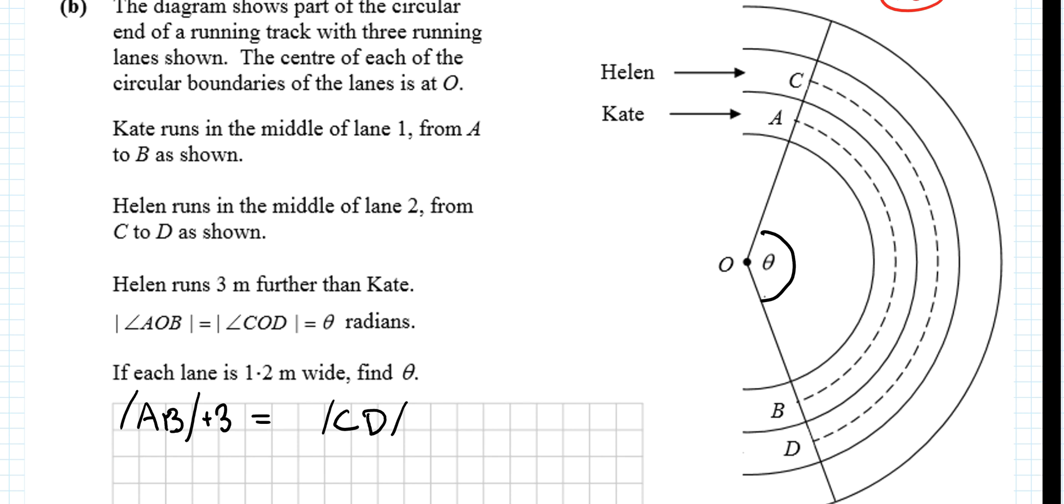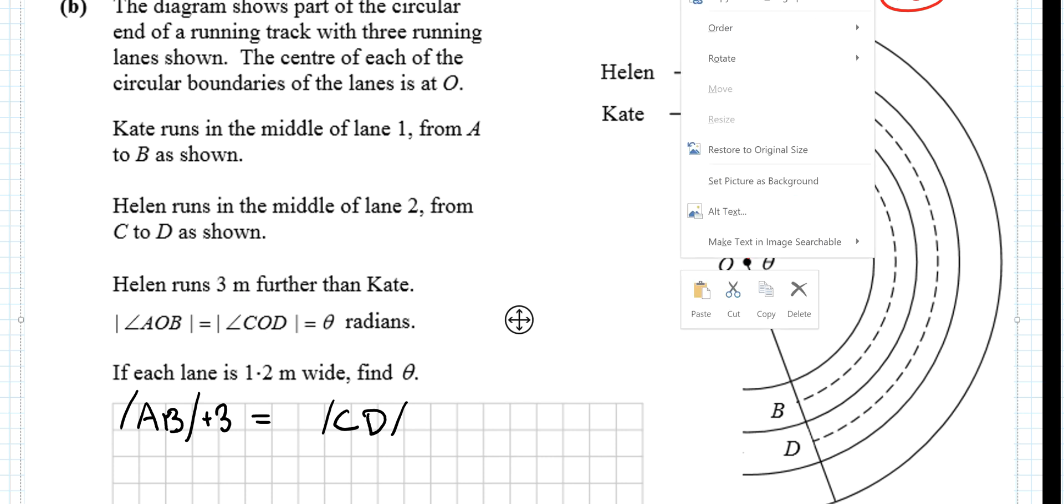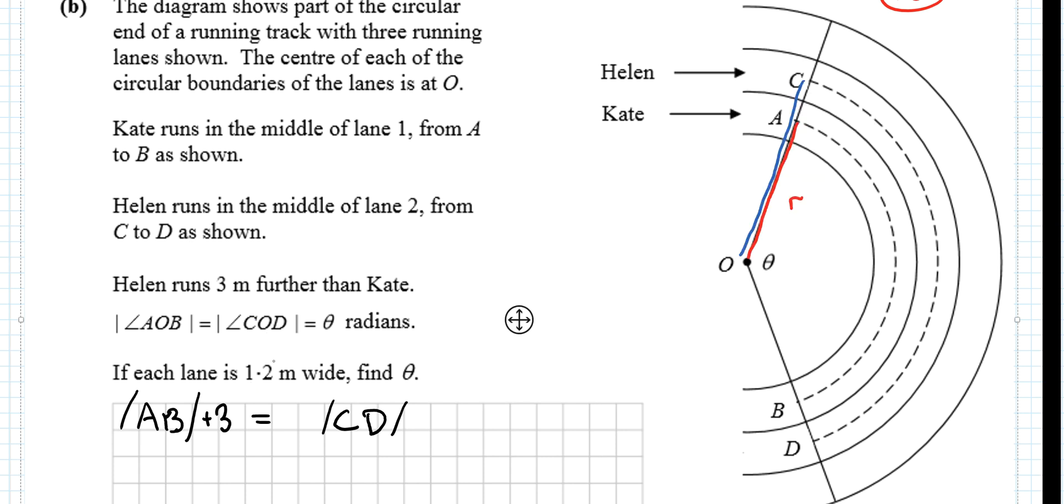We know this angle here in the middle is the same. If we were to refer to this distance as OR, the radius, what's the radius of the other distance? Well, we know the lanes are how wide apart? It says that in the question here, they're 1.2 metres apart.